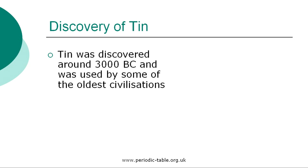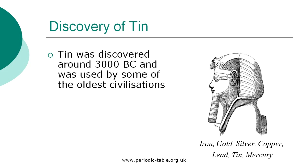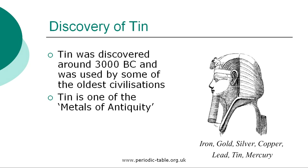Tin was discovered around 3000 BC and is one of the first metals mined and crafted by man. Some metals, including tin, were used by some of the oldest civilizations, including the ancient Egyptians, Greeks, and Romans. Right up to the medieval period of the Middle Ages, people believed that only seven metals existed. These seven metals were iron, gold, silver, copper, lead, tin, and mercury, and are now referred to as the metals of antiquity.